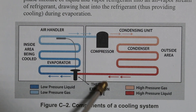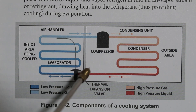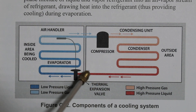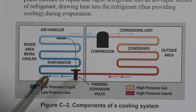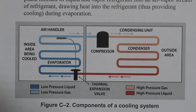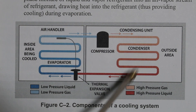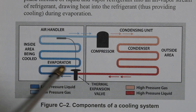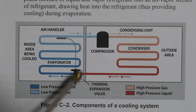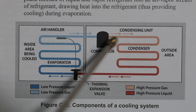In this diagram we have a thermal expansion valve as our metering device. Here we have a pressure drop: following our color code, we are entering as a high pressure liquid and leaving as a low pressure liquid. Our metering device is what separates the system from high to low — so on one side we are either a high pressure gas or liquid, and on the other we are either a low pressure liquid or gas. This is our low side and this is our high side.